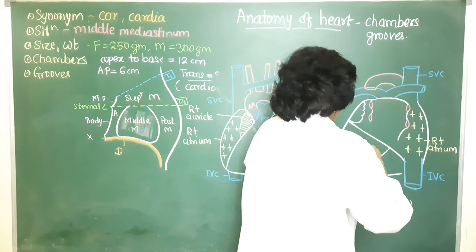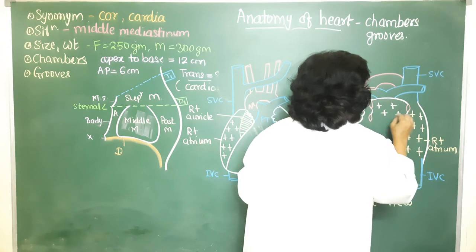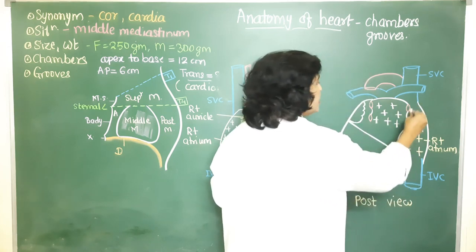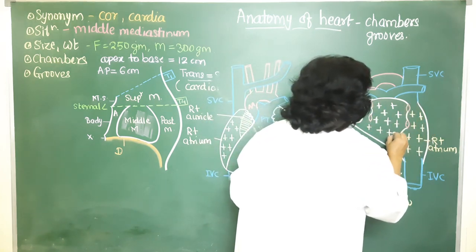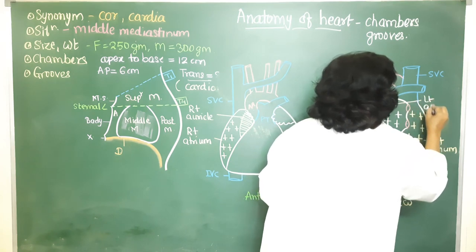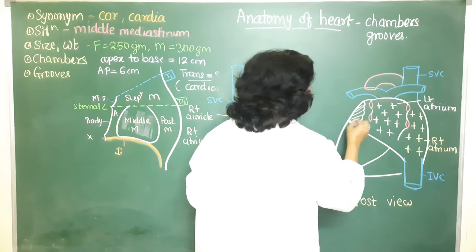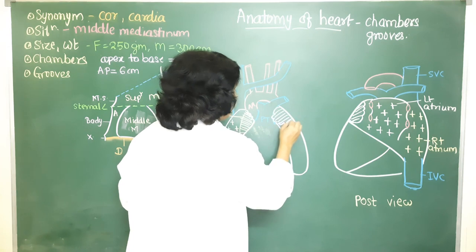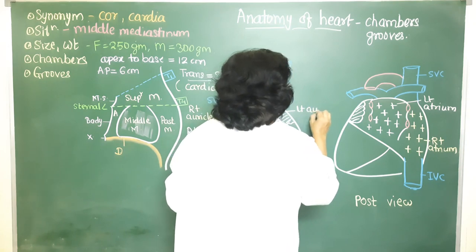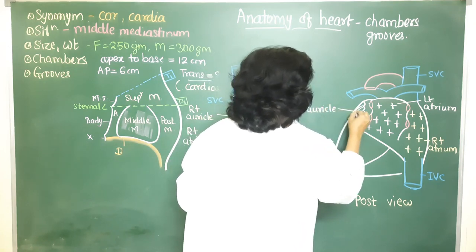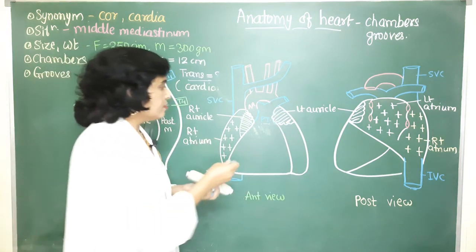The left atrium is seen only from the posterior view. It receives oxygenated blood through four pulmonary veins — superior and inferior pulmonary veins from both the right and left sides. The left atrium also has an ear-like appendage which extends anteriorly and encroaches on the root of the pulmonary trunk. This is called the left auricle, which is also notched on its outer surface.